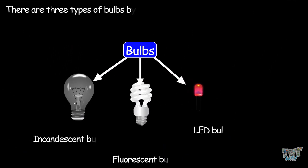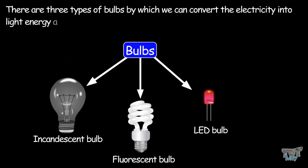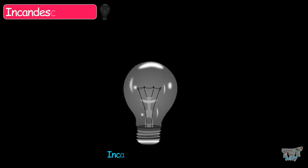Now we will learn three types of bulbs by which we can convert electricity into light and heat energy. The first one is the incandescent bulb.